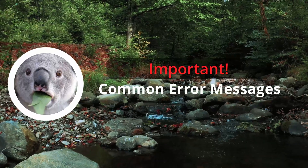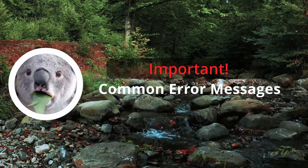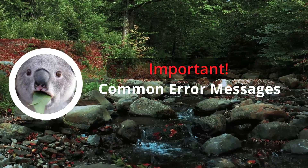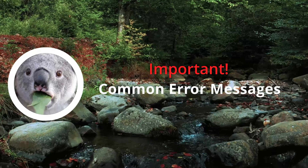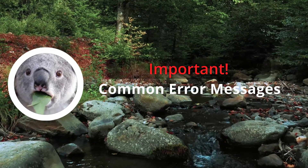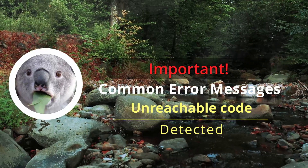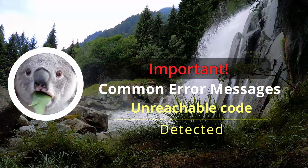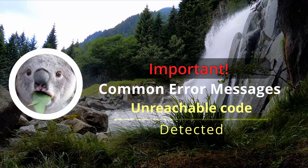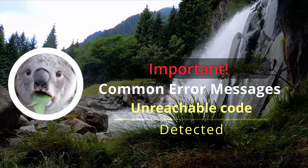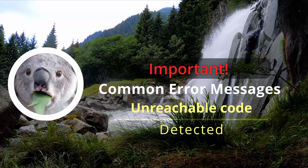If you encounter an error when running your code, it is essential to carefully read the error message and understand what it means. Common error messages when working with control structures and loops include "unreachable code detected." This error occurs when there is code that cannot be reached because it is preceded by a return, throw, or infinite loop. To fix this error, you need to remove the unreachable code or change the control structure to allow the code to be reached.